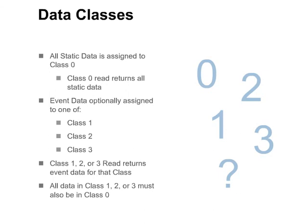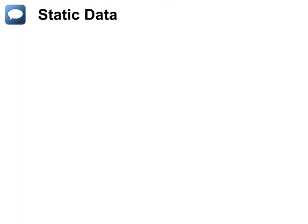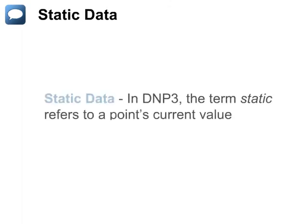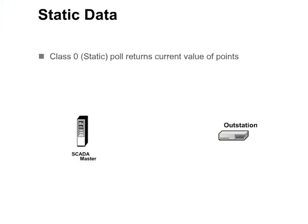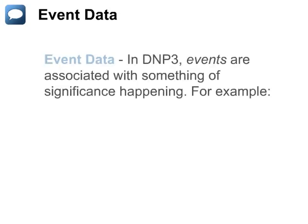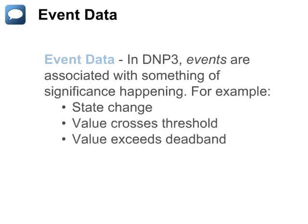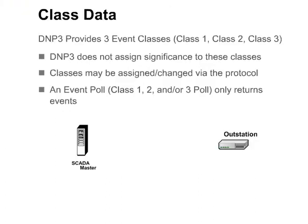In DNP, the term static data refers to a point's current value. A class 0 poll returns the current value for all points in class 0. Any points in class 1, 2, or 3 must also be in class 0. Events are associated with something of significance happening — most commonly a state change or a change in the data's value. However, it could also be because a value crossed a threshold or exceeds a deadband, or it might represent a snapshot taken at a particular time. DNP supports three event classes, called class 1, class 2, and class 3.